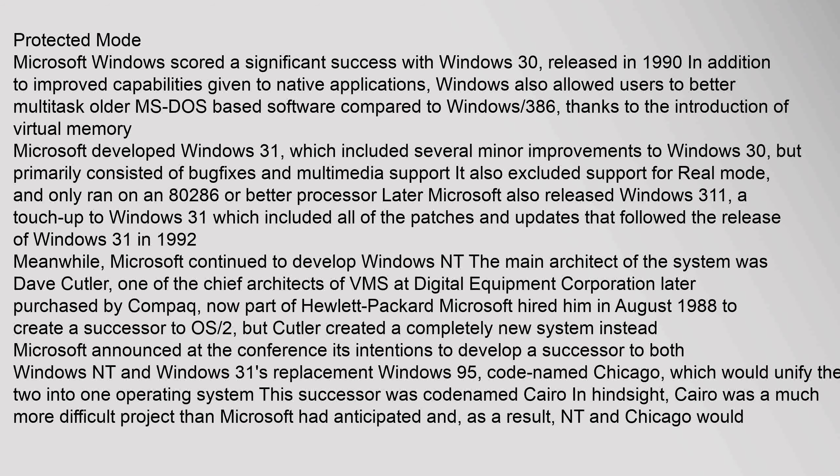Microsoft Windows scored a significant success with Windows 3.0, released in 1990. In addition to improved capabilities given to native applications, Windows also allowed users to better multitask older MS-DOS based software. Microsoft developed Windows 3.1, which included several minor improvements to Windows 3.0, but primarily consisted of bug fixes and multimedia support. It also excluded support for real mode, and only ran on an 80286 or better processor. Later, Microsoft also released Windows 3.11, a touch-up to Windows 3.1 which included all of the patches and updates that followed the release of Windows 3.1 in 1992.